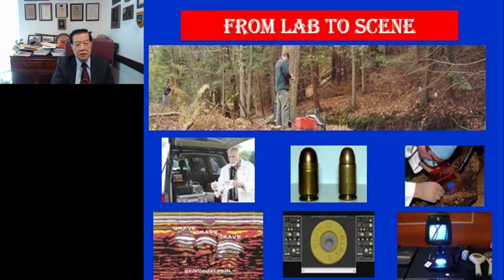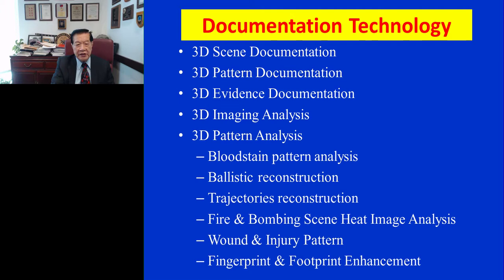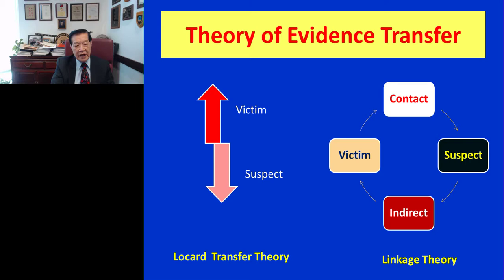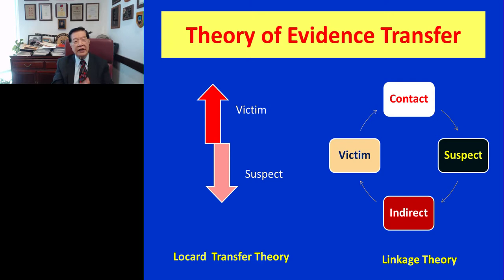Documentation technology has also changed tremendously. Now we are using 3D and 360-degree cameras. The linkage theory was proposed by Professor Locard in the early 18th century — that when two things are in contact, evidence transfers across the boundary. That worked very well as the foundation of forensic examination of trace evidence. But today the concept has changed: you don't need physical contact, because airborne and many direct/indirect exchanges occur. So the linkage theory has evolved.